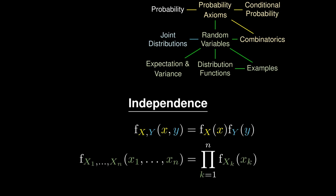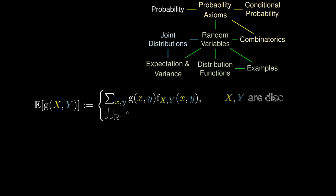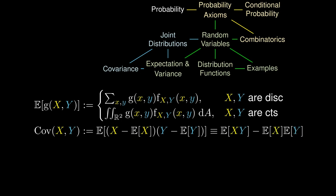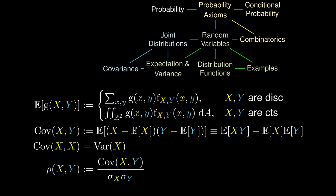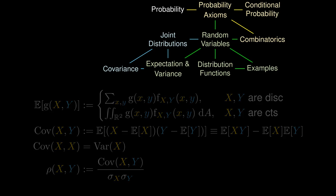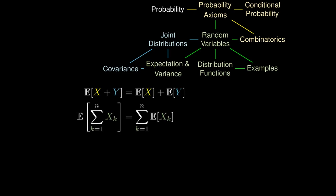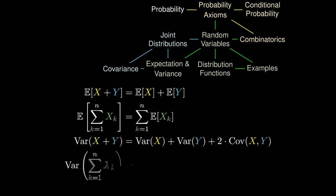Just like before, we can define the expectation of a joint random variable as its weighted average. This helps us define the covariance between X and Y, which measures how connected the two random variables are. The covariance of X with itself is the variance of X. This leads us to the correlation coefficient, essentially a scaling of the covariance. Notably, the expectation of a sum of random variables is the sum of the expectations, and the variance of a sum includes a covariance term.